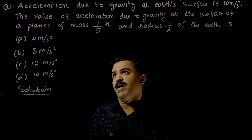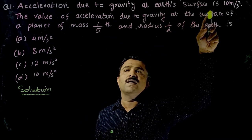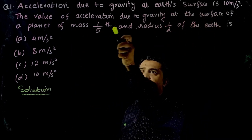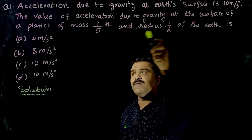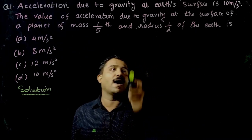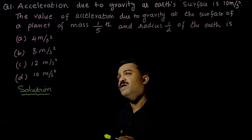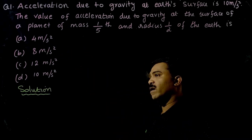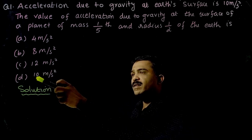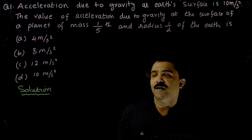The first question: the acceleration due to gravity at earth's surface is 10 meter per second square. The value of acceleration due to gravity at the surface of a planet of mass 1/5th and radius half of the earth is. Options: A) 4 m/s², B) 8 m/s², C) 12 m/s², D) 10 m/s².